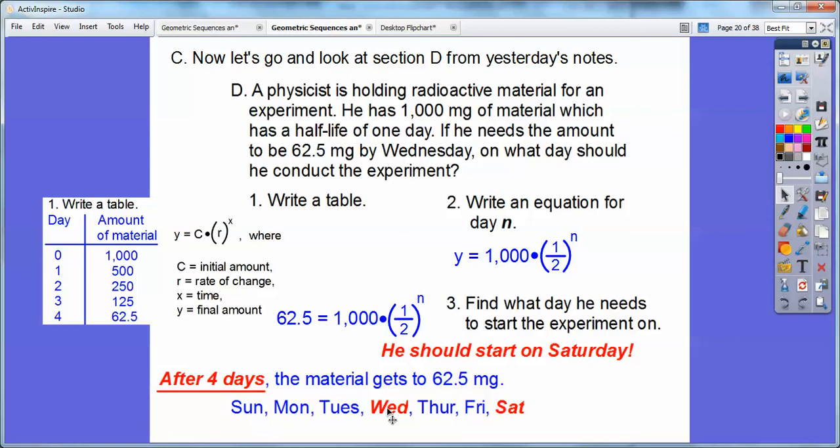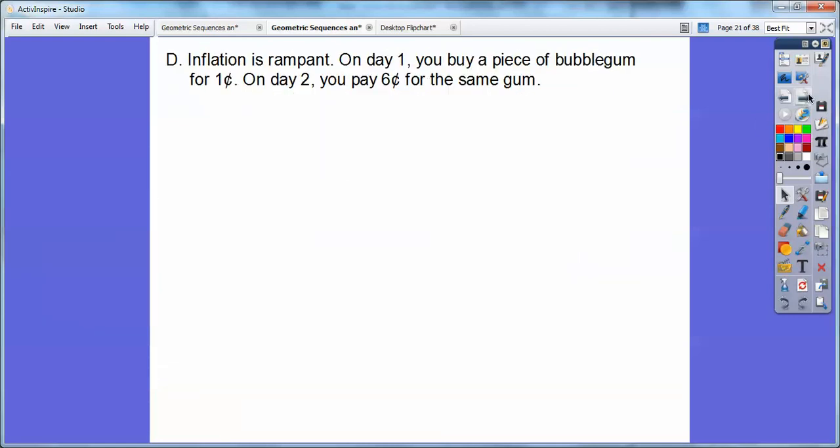So it took four days to get down there. So we made a little chart of a calendar on the bottom right here. And it said it had to stop by Wednesday. He needed the 62.5 by Wednesday. So if we just go back four days, one, two, three, and then back here to four, then that means he should start it on Saturday. And then it should get to our desired result of 62.5. And 1 half to the fourth power gets me 0.0625.